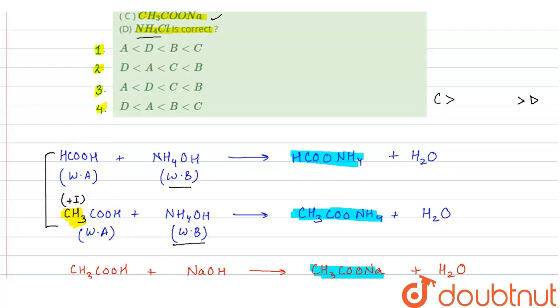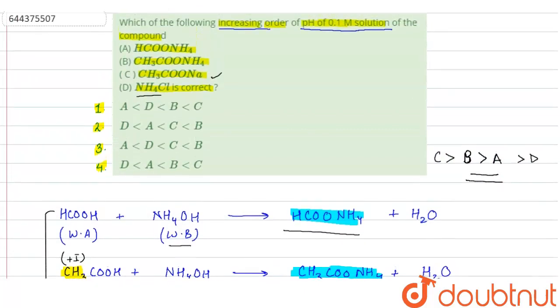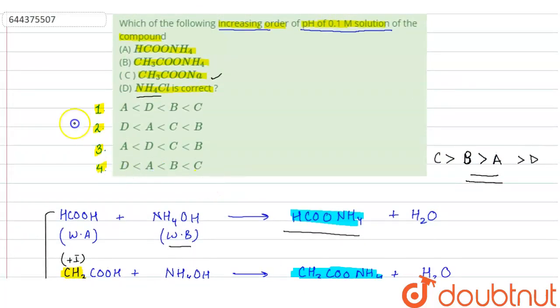If it is a stronger acid, in this case, this salt will be having lower pH in comparison to CH3COONH4. From here we get B will be having CH3COONH4, that is B will be having greater pH in comparison to A. So this is the correct order and this order is given in option fourth. Option fourth is the correct option. Thank you.